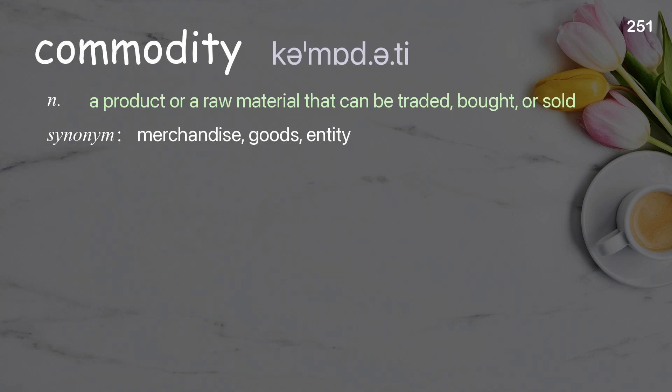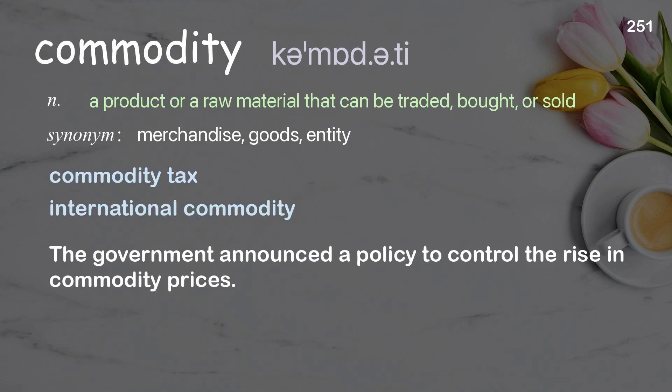Commodity: a product or a raw material that can be traded, bought, or sold. Examples: commodity tax. The government announced a policy to control the rise in commodity prices.